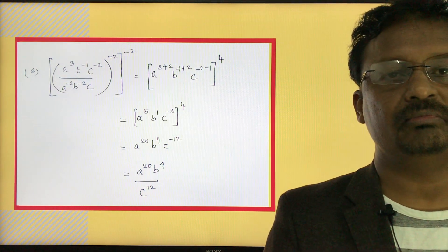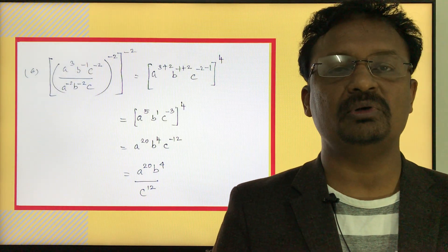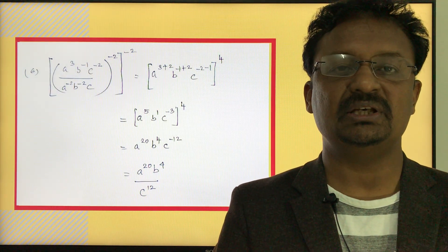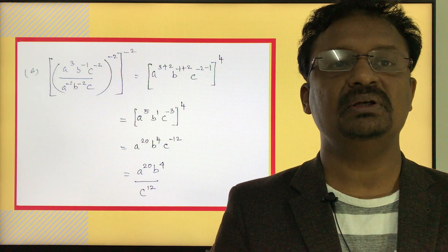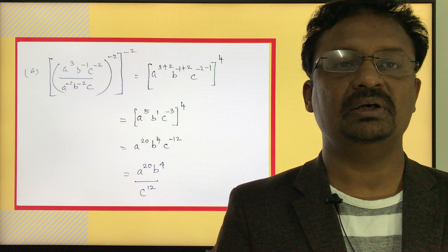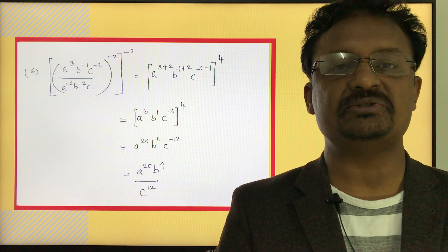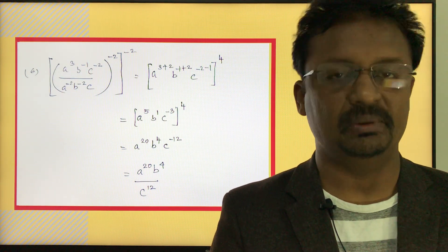Applying the negative exponent rule for c to the power of negative 12, the final solution is a to the power of 20 times b to the power of 4, divided by c to the power of 12. Always write the final solution with positive exponents in integer and rational exponent problems.